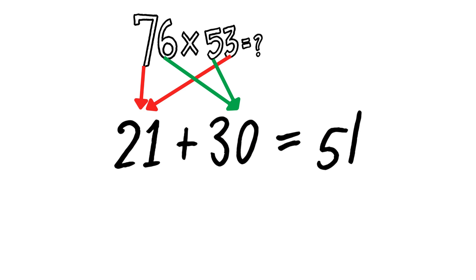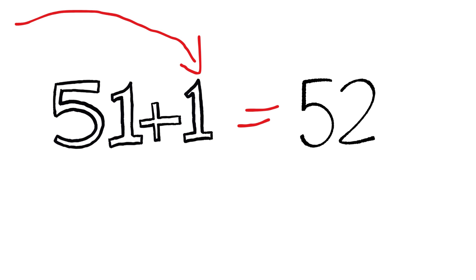Crisscross. Seven times three is twenty-one, and six times five is thirty. Add them together: fifty-one. Add the carried one: fifty-two. Write down two, carry the five.